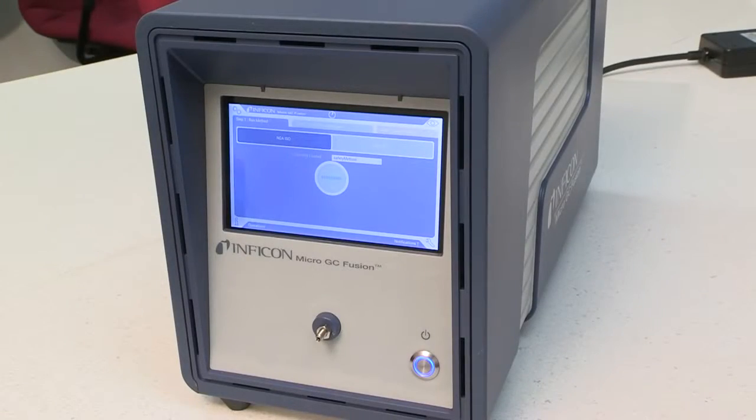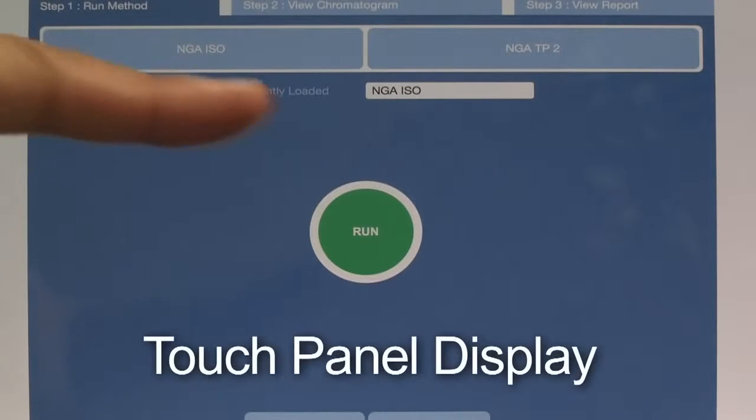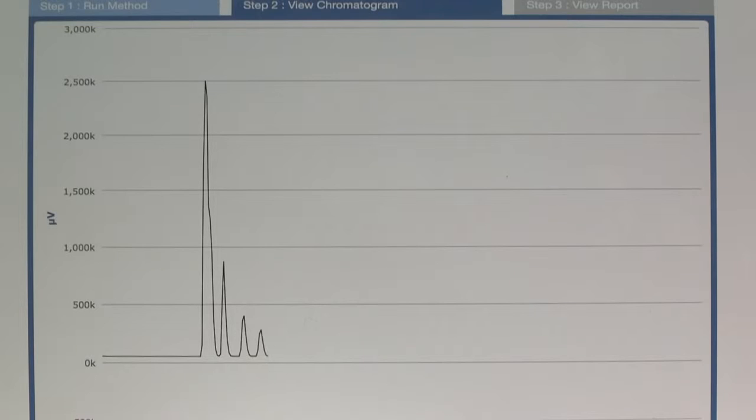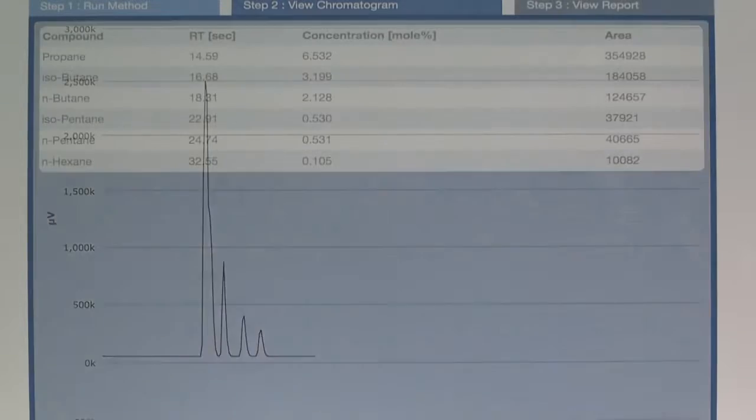Fusion is designed to make GC technology user-friendly. It is equipped with a touch panel display, allowing users to select a predefined method, run a sample, and view the results.